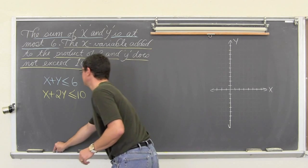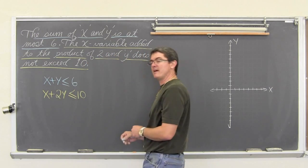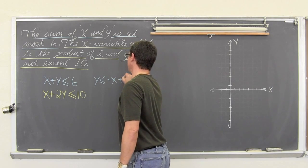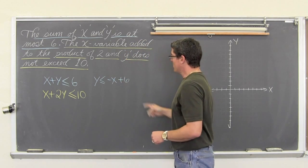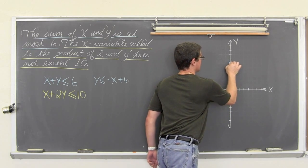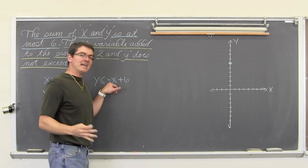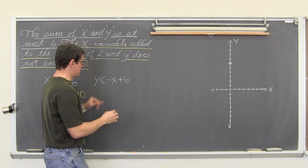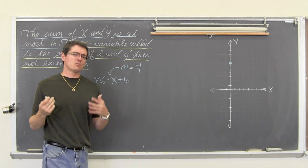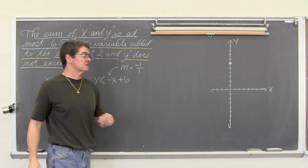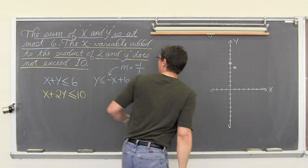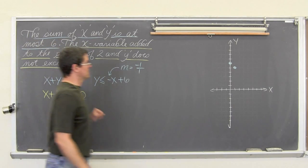Subtracting x from both sides gives y is less than or equal to negative x plus 6. So we have a y-intercept of 6 and a slope of negative 1, which means down 1 over 1. We do have an equal sign in our inequality, so it will be a solid line.